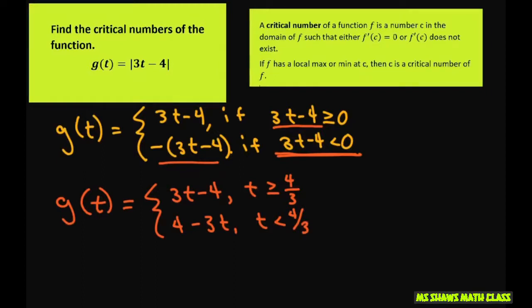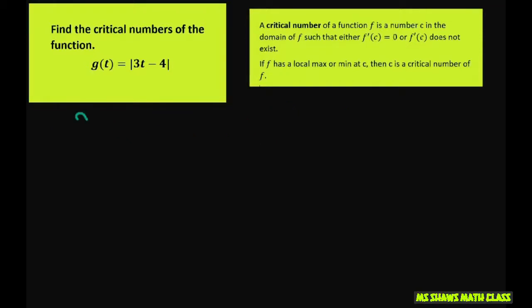Now when you take the derivative of g, we're going to get 3 and -3 when you take the derivative. So we're going to have g'(t) = 3 if t > 4/3. Now you can't put the equal because 3 and -3 aren't the same. That wouldn't make sense. And -3 if t < 4/3.